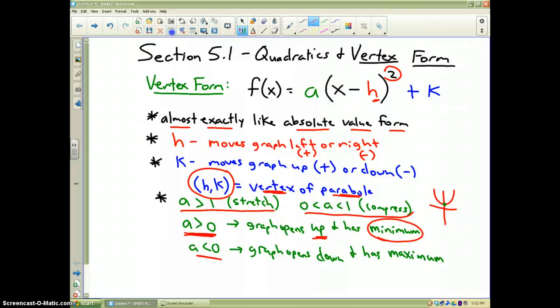If the a value is smaller than 0, that means a is negative, the graph opens down, and it's got a maximum value. Because, again, if it's upside down, then the vertex is at the highest point, or the highest y value, therefore, that would be its maximum. So that's kind of what the values a, h, and k control.